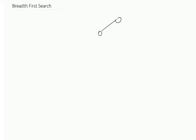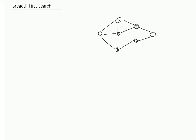You are given a graph. Let us say that these are the nodes: 1, 2, 3, 4, 5, 6 and 7. This is a graph, and a graph can be either directed or undirected. Let us just assume this is directed, and this is the direction of the edges.